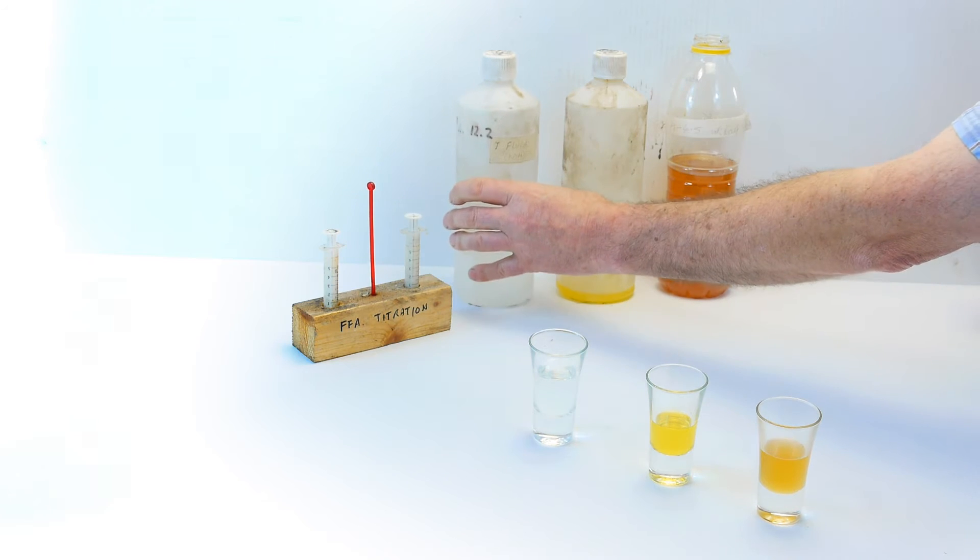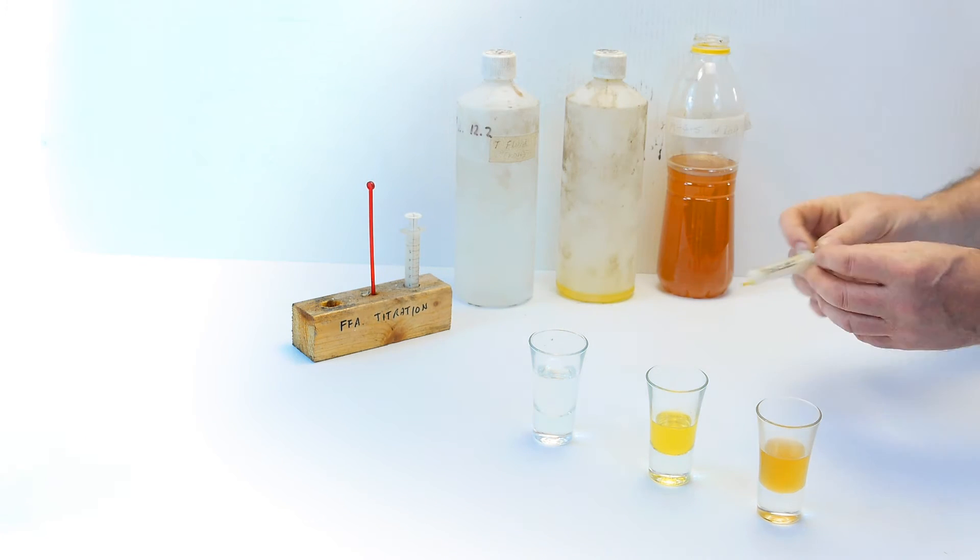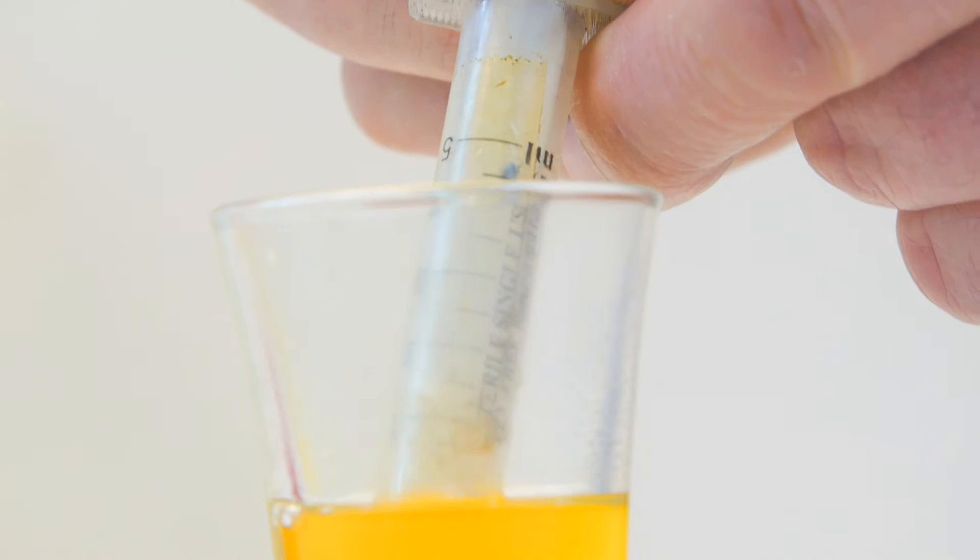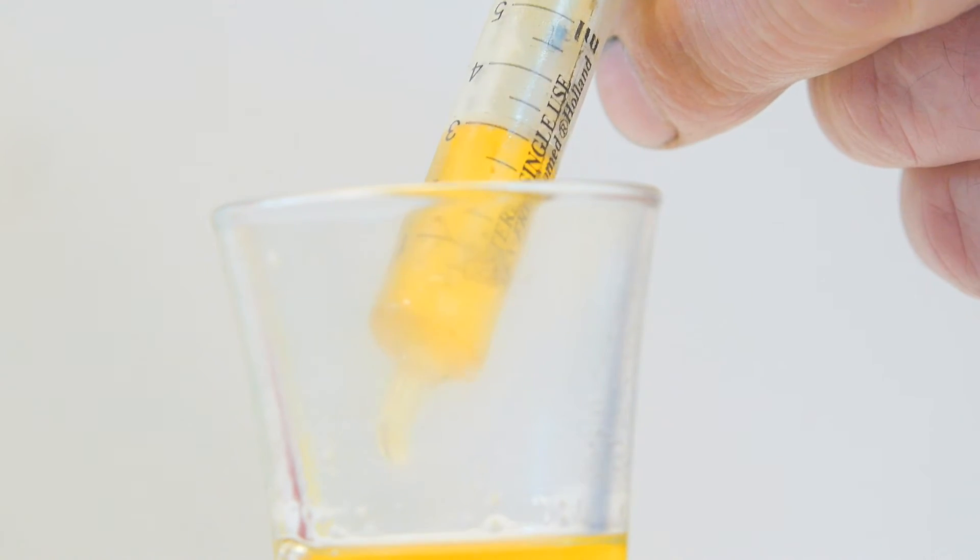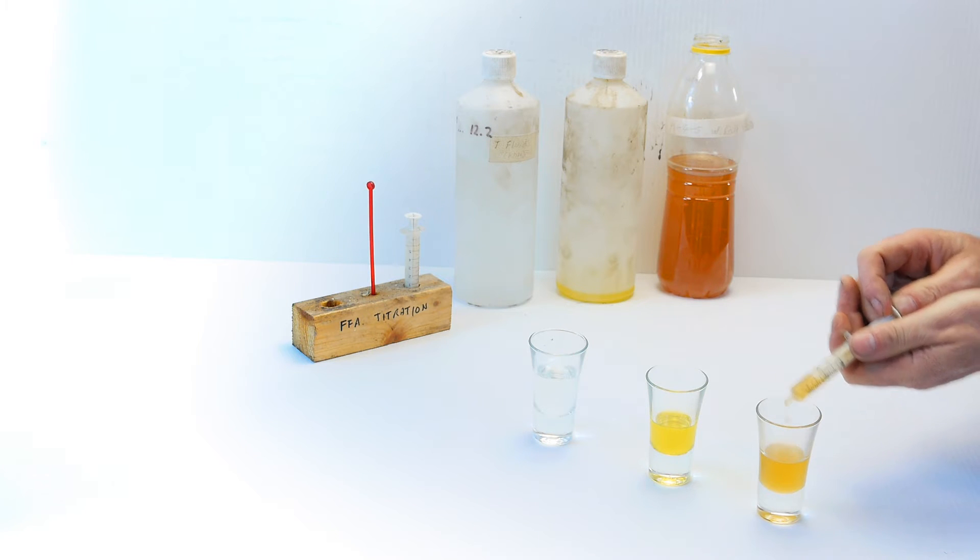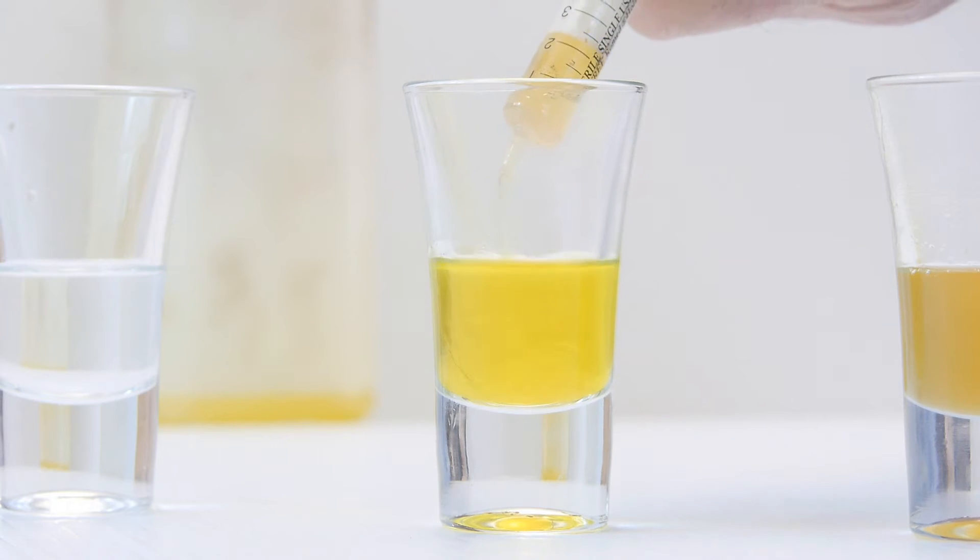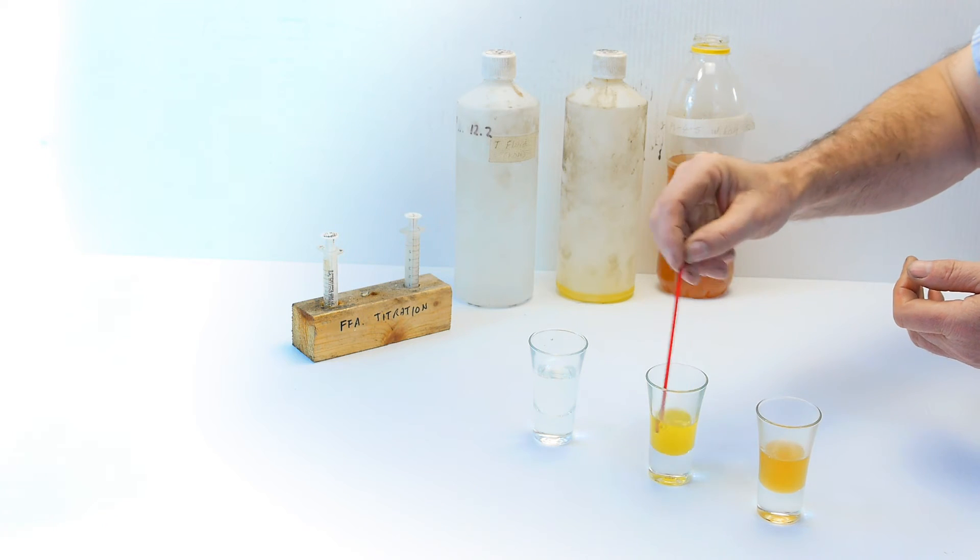Now, take the syringe marked O and fill it with oil. Take up about three milliliters and then squeeze one milliliter into the indicator. Be as accurate as you can. Give it a quick stir.